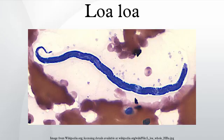Biology: Loa loa worms have a simple body including a head, body, and tail. Males range from 20 mm to 34 mm long and 350 µm to 430 µm wide. Females range from 20 mm to 70 mm long and are about 425 µm wide.